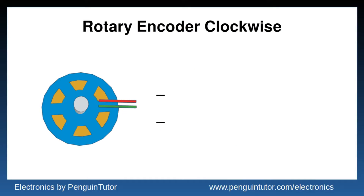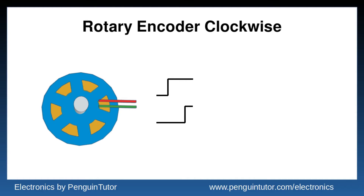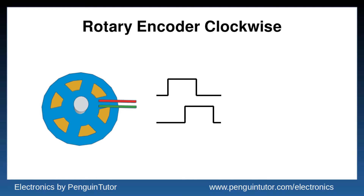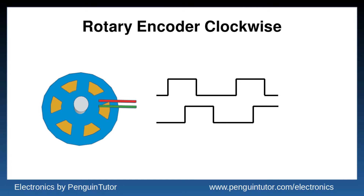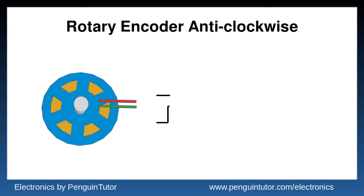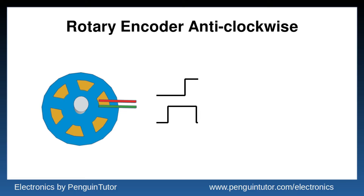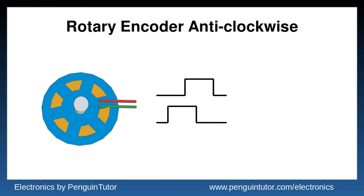I'll use some waveforms to demonstrate how the encoding works, which is typically based on a two-bit gray encoding with one output being out of phase from the other. In the clockwise direction, signal A is leading — it changes from low to high before signal B. When the encoder moves in the anti-clockwise direction, signal B is leading and changes to a high signal before signal A.